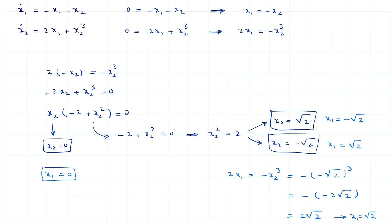We showed that this dynamical system has three equilibrium points. The first one is x1 and x2 equals 0 and 0. The second one is x1 and x2 equals minus square root of 2 and square root of 2. And the third one is square root of 2 and minus square root of 2.